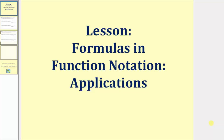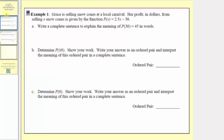Welcome to a lesson on solving application problems with formulas written in function notation. Here we're told that Grace is selling snow cones at a local carnival. Her profit in dollars from selling x snow cones is given by the function p of x equals 2.5x minus 30.